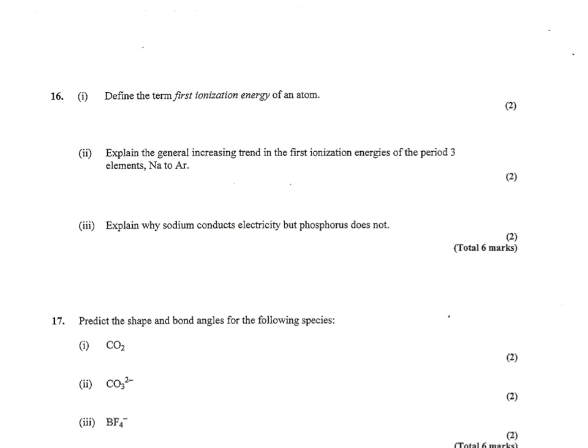Number 16 wants to know the first ionization energy of an atom. Define the term. This one's a little bit tricky because it just says of an atom. So you had to mention it's energy, and it's the energy to remove one electron from a gaseous atom. So you had to mention that it has to be a gas, and it's just the one electron, because we're not talking about a whole mole's worth here, we're just talking about an atom.